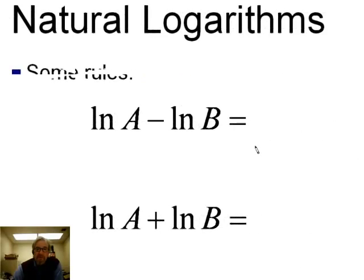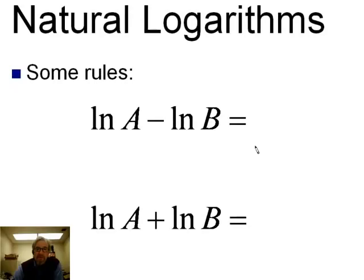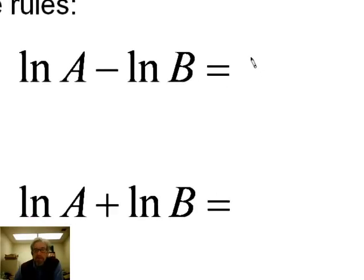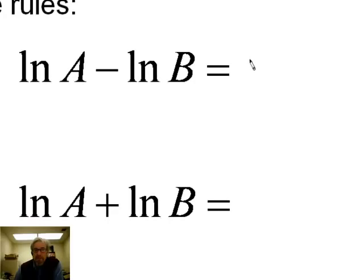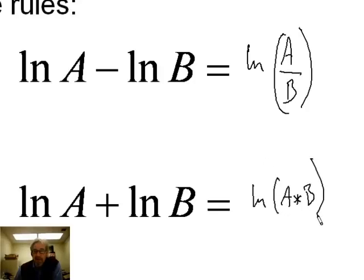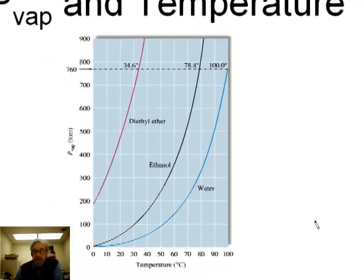So the natural logarithm of a number is the number to which you must raise E to get that number. Probably more important for our purposes are some of the rules that we use for dealing with natural logarithms. The natural log of a number minus the natural log of another number is equal to the natural log of the first number divided by the second number. And the natural log of a number plus the natural log of another number is equal to the natural log of those two numbers multiplied together.